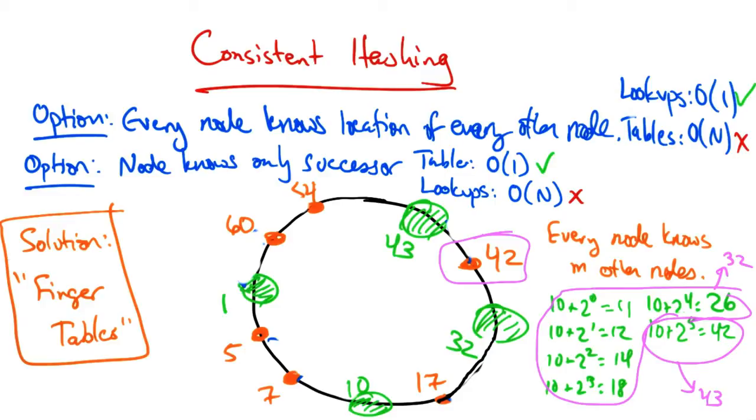Now every node knows its immediate successor. So what we want to do is find the predecessor for a particular ID, and then ask for the successor of that ID. So let's suppose that node 10 wanted to look up a key corresponding to the ID of 42. It can use the finger tables to find the predecessor of that node, which in this case is 32. Its finger tables have the mapping of that node's location as well. It then can ask node 32 for its successor.